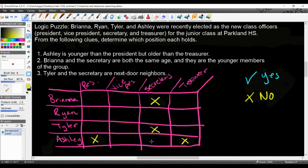If the secretary is Ashley, if this were a yes, that means that Ashley and Brianna are the youngest ones in the group because it says they're the younger members of the group. And that also means that clue number one wouldn't be valid because here it says that Ashley is younger, but she's older than the treasurer. So if Brianna and Ashley are the same age, and they're the youngest ones, that means that they cannot be older than anybody, which means that Ashley is not the secretary.